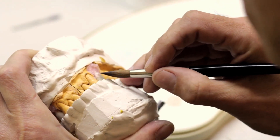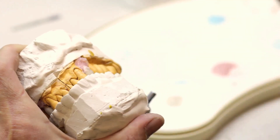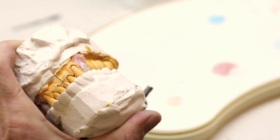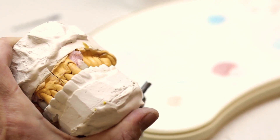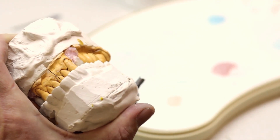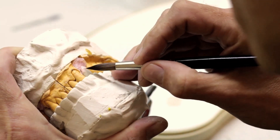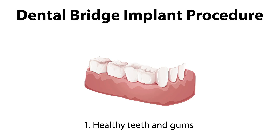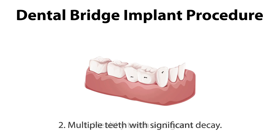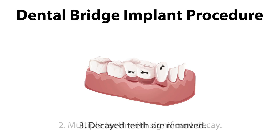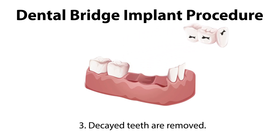Dental implants primarily involve replacing a tooth's root with a titanium post, followed by attaching a custom-made crown. On the other hand, dental bridges, as their name implies, bridge the gap created by one or more missing teeth, using the adjacent teeth as support.